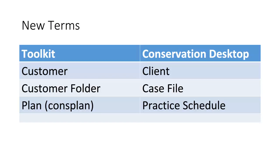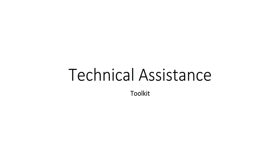It makes more sense to think of different parts of his conservation plan as practice schedules. He may have a schedule to accomplish grazing practices and nutrient management practices, but he may also have a schedule to implement 2014 EQIP practices and 2017 EQIP practices. Those should not be considered plans, but schedules to implement his overall conservation plan.